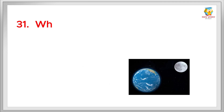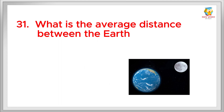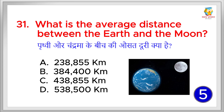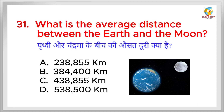What is the average distance between the Earth and the moon? Prithvi aur chandrama ke beech ki ausat doori kya hai? The correct answer is 384,400 km.